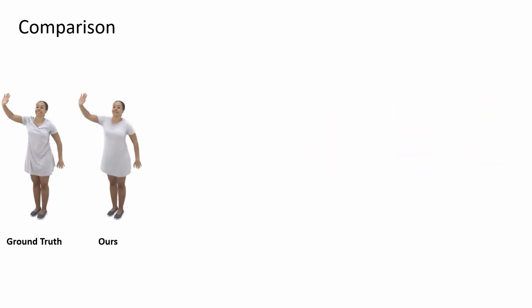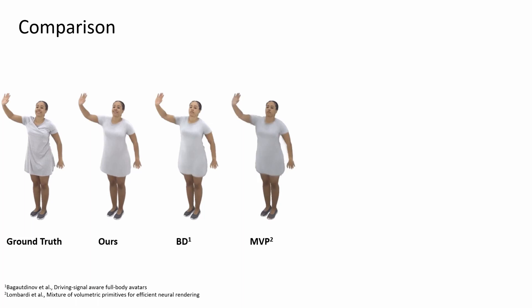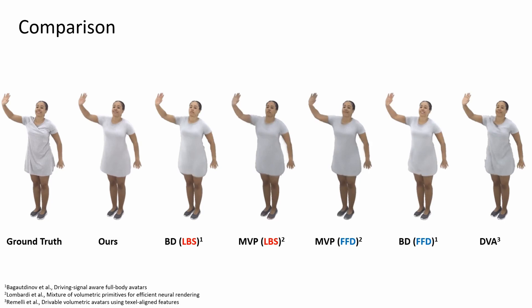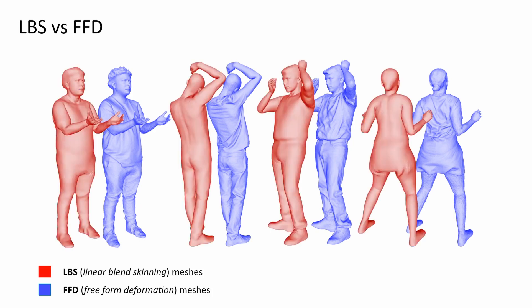We compared DEGA to other state-of-the-art methods: the mesh-based body decoder method by Bagout-Dinov et al., denoted as BD; MVP by Lombardi et al. applied to full-body avatars; and the image-conditioned approach DVA by Remeli et al. We compared against baselines trained on two types of geometry: high-frequency detail meshes using free-form deformation (FFD) and low-frequency ones (LBS). All baselines initially use FFD meshes, which significantly improves results, but those meshes require extensive iterative methods at training time. Since DEGA requires only a rough approximation of geometry, we also train a version with LBS meshes, whose level of detail is limited by the parametric body model.